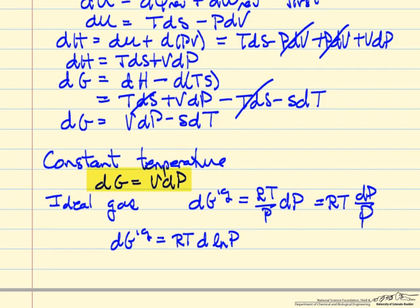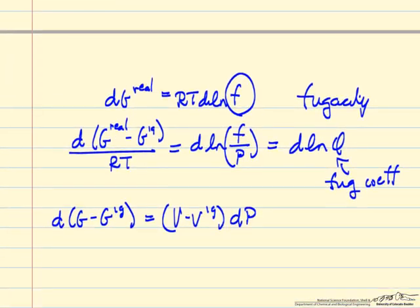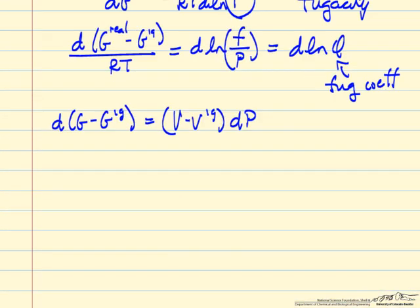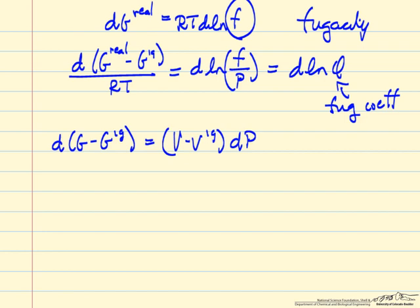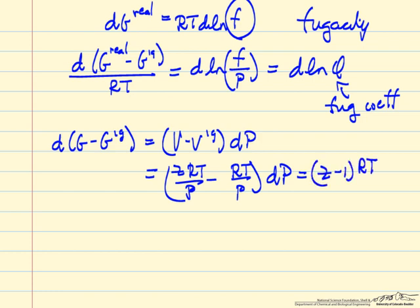So if we were to go back and remember that at constant temperature, DG is VDP, we could subtract that equation for a real gas, so without the IG and all this is a real ideal gas, and we could write this in terms of a compressibility factor, Z, and compressibility factor is 1 for an ideal gas, DP.